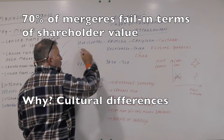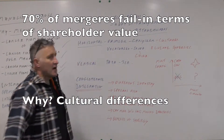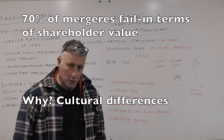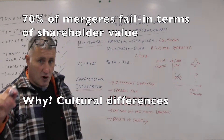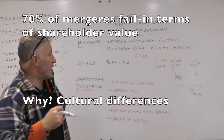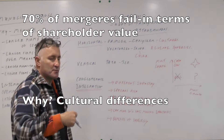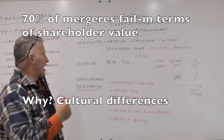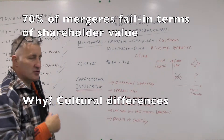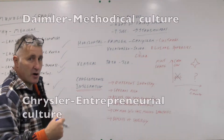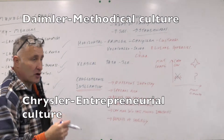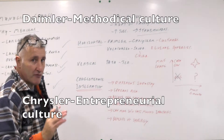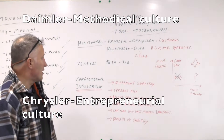We know of some horizontal integration here. The classic case of something that failed was Daimler Chrysler. Chrysler was characterised by an entrepreneurial culture. Daimler was German, characterised by a methodical culture, and the two cultures clashed. So therefore it never really worked.